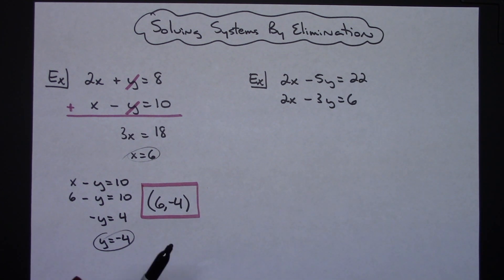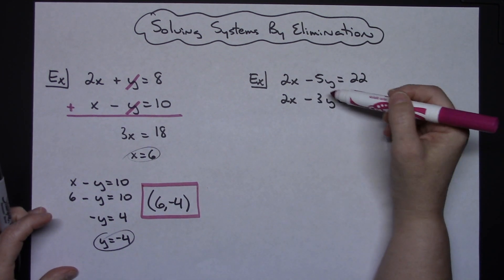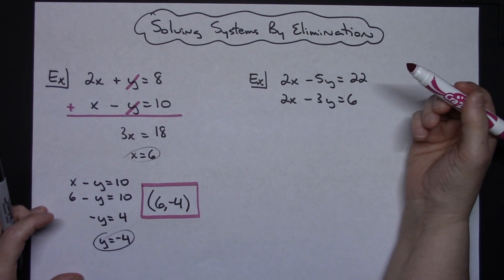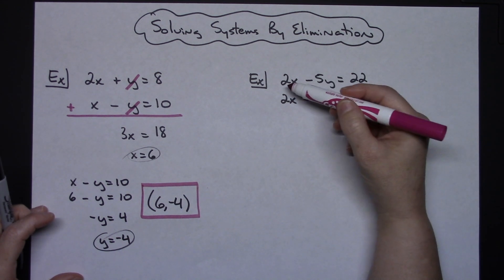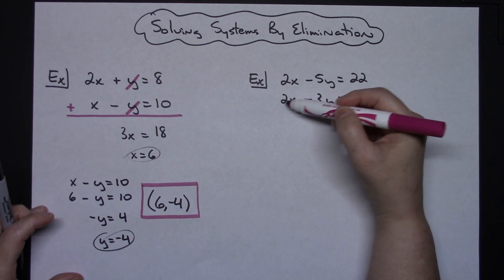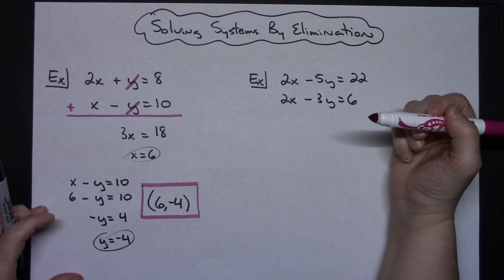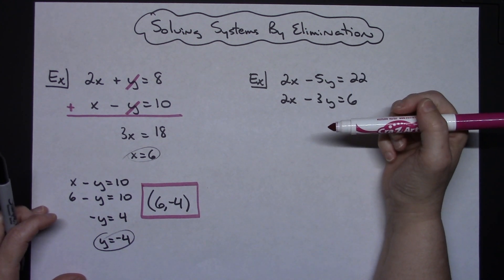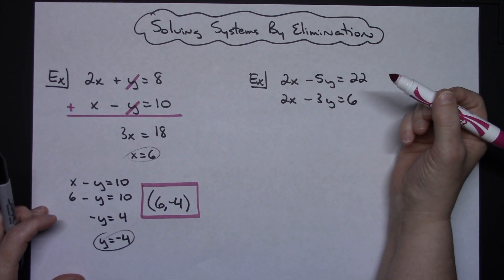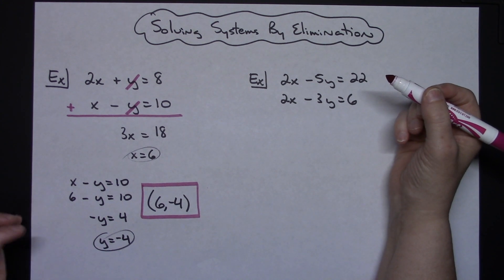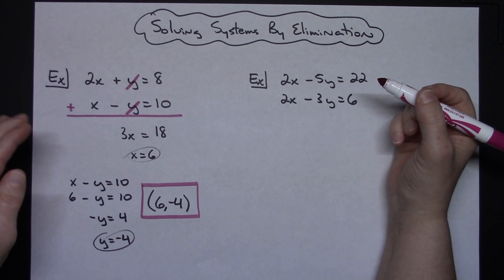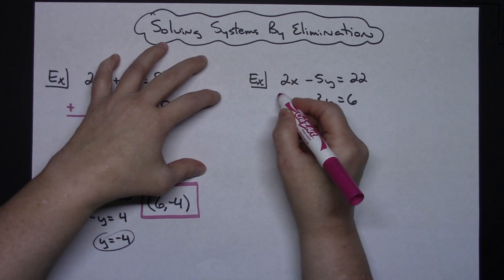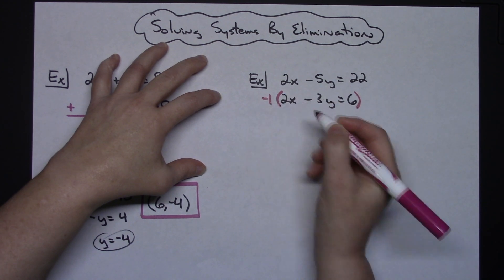On the second example, again I'm going to look at those x terms and y terms and see if anything crosses out right away if I add them — and the answer on this one is no. However, looking at the 2x and the 2x, they would fall out if one of them was negative. So sometimes you're going to need to multiply either the top equation or the bottom equation by something to make the terms fall out. I'm going to choose to multiply the bottom equation by negative 1.